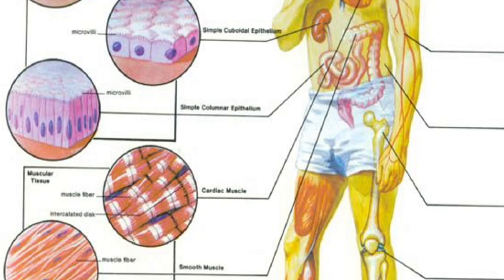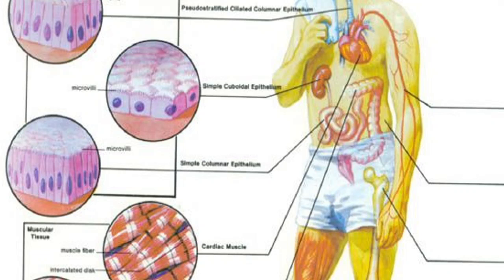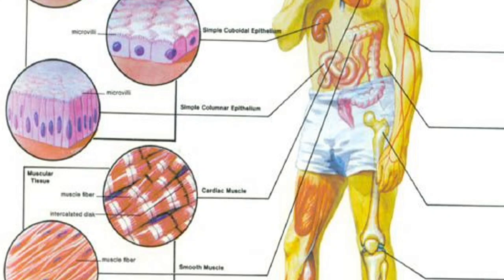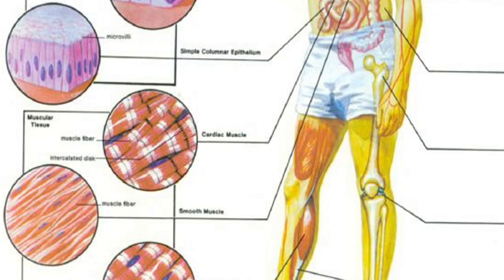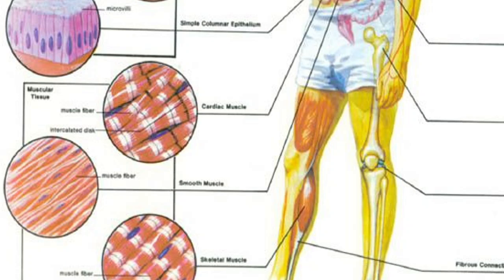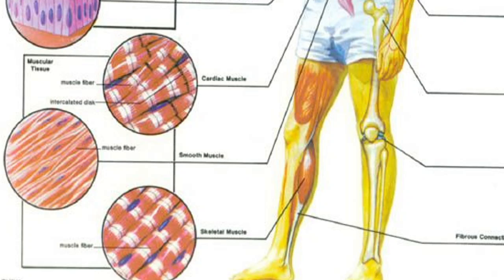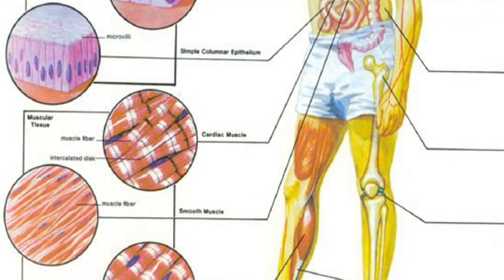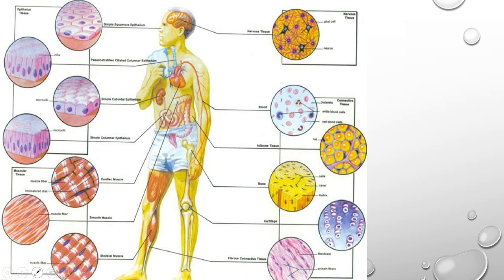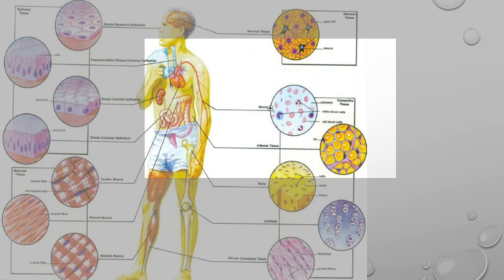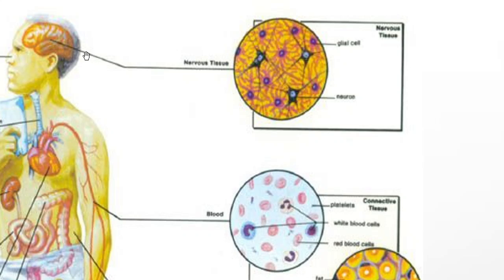We also have the cardiac muscle found in the heart, smooth muscles found in internal organs, and skeletal muscle found attached to the bones — more so in the limbs. Nervous tissue is found in the brain, spinal cord, and nerves.